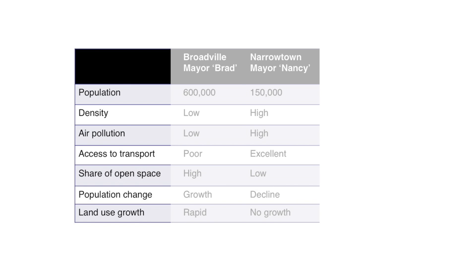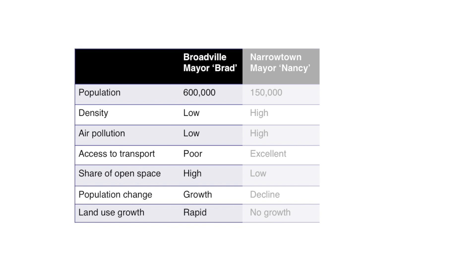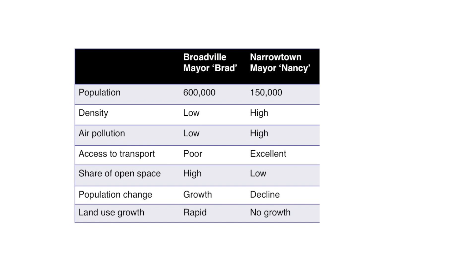What does that mean for Brad and Nancy? Brad, mayor of Broadville, thinks he's a mayor of 600,000 people. He thinks the density of a city is low, air pollution is low, and access to public transport is not great. But there's a lot of open space and population change is positive — there's growth. Land use growth is also quite rapid. Nancy, mayor of Narrowtown, thinks she's a mayor of a city of 150,000 people. Density is very high, air pollution is high. Fortunately, access to public transport is excellent. But there's not a lot of open space and population change is negative — there's a decline. And land use growth, well, there's so much built-up area they can't build anymore.